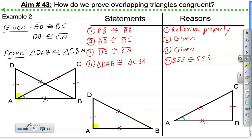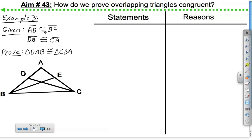Alright, let's look at another example. So, we have here, given AB is congruent to BC, DB is congruent to CA. We have to prove that triangle DAB, oh shoot, this is wrong.